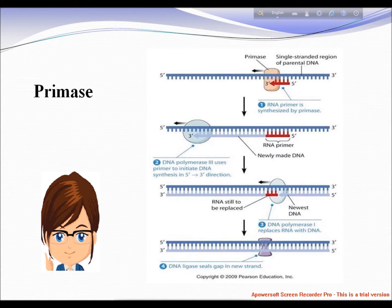DNA primase is a type of RNA polymerase which creates an RNA primer. Later, this RNA piece is removed by a 5 prime to 3 prime exonuclease. Next, DNA polymerase uses the RNA primer to replicate single-stranded DNA.